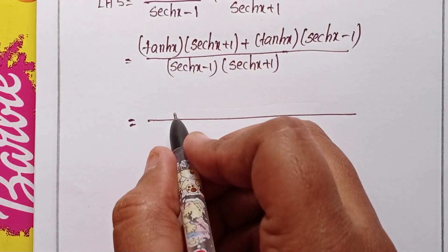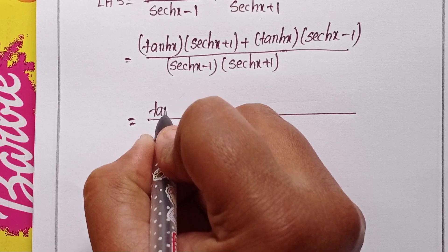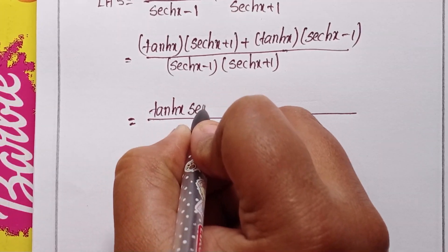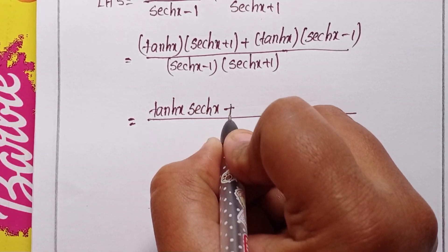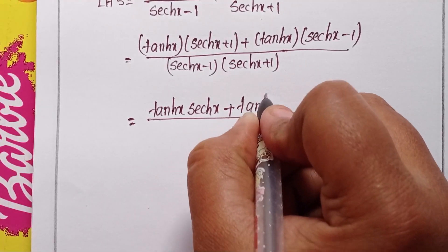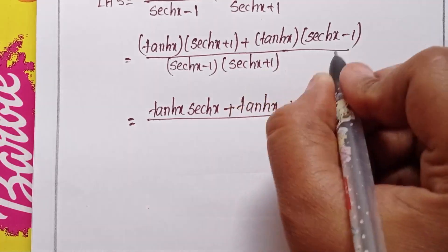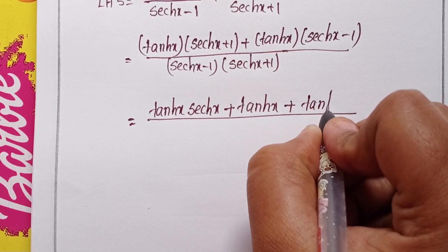Multiplying with each term: tanh x times sech x plus tanh x times 1, same here, tanh x times sech x plus times minus, minus tanh x.